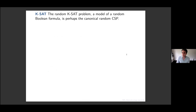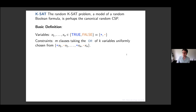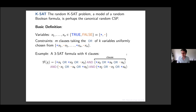Another example — perhaps the canonical example of a constraint satisfaction problem — is the random k-SAT model. It's a random boolean formula: you have n variables taking values either true or false (or plus or minus). The constraints are formed by taking the OR of k variables or their negations, chosen from the 2n choose k possible clauses, and we want all of these clauses to be satisfied — we take the AND of them. A solution is an assignment of the variables so that the formula evaluates to true. Obviously, the more constraints you put on, the fewer solutions you'll have.